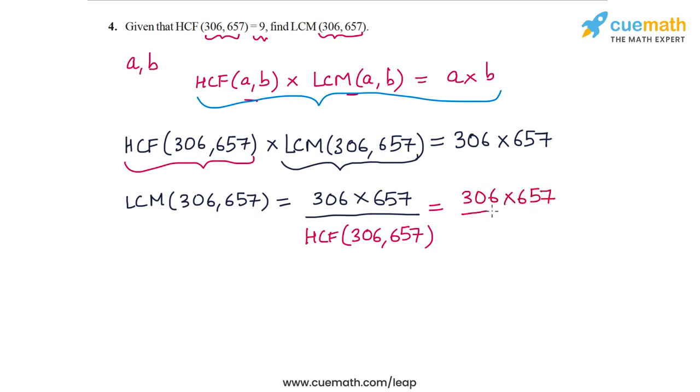The value of this product divided by 9 equals 22,338. So this is the LCM of 306 and 657, and with that we have solved question number 4.